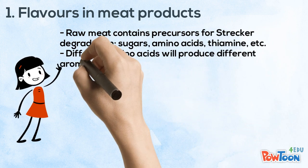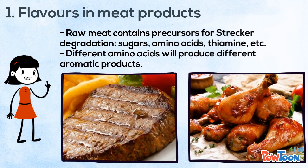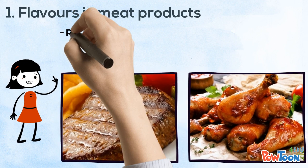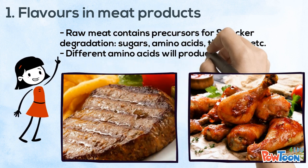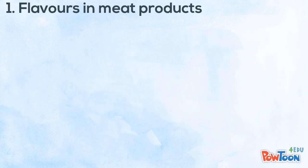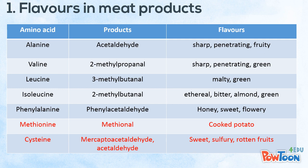Via cooking, many reactions including Strecker degradation occur to form aromatic compounds. Different amino acids will produce different products. Common amino acids are alanine, valine, leucine, isoleucine, methionine, and cysteine. Their respective products include acetaldehyde, 2-methylpropanal, 3-methylbutanal, 2-methylbutanal, phenylacetaldehyde, methional, and mercaptoacetaldehyde, each with different aromas.